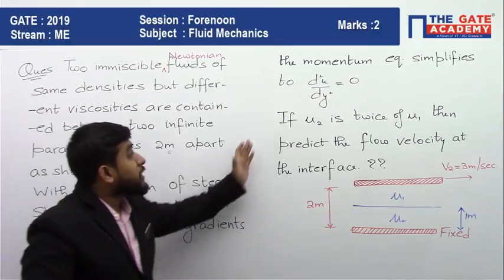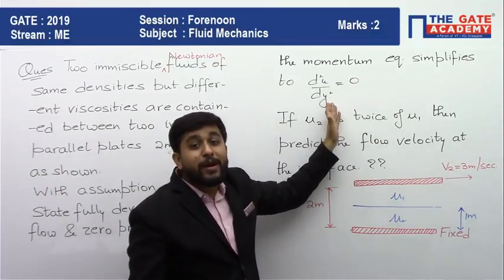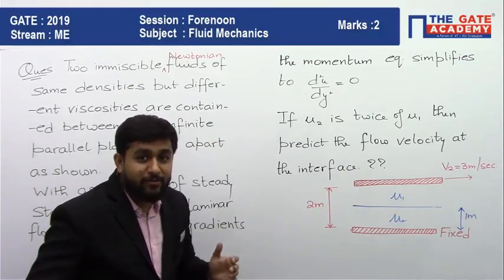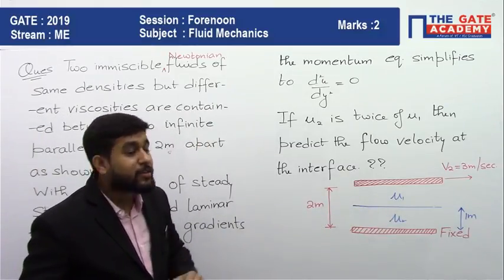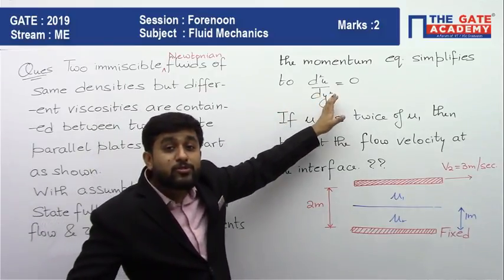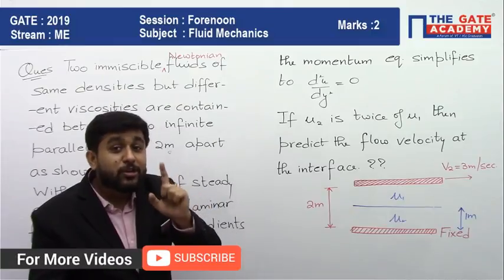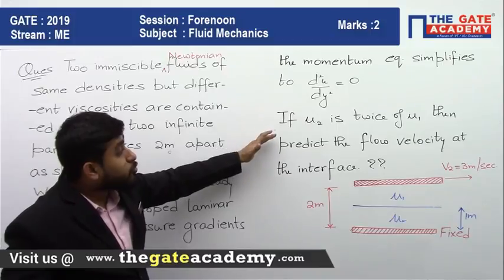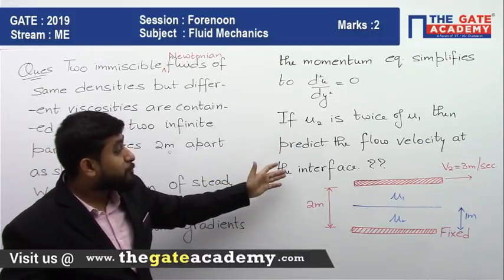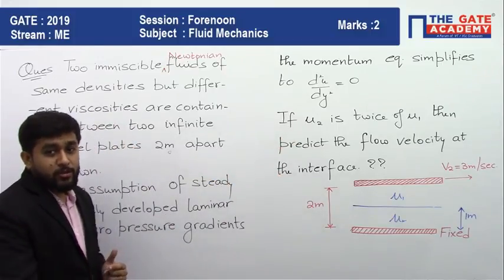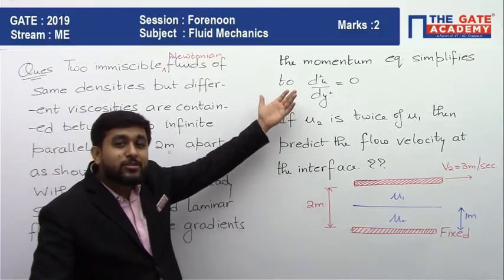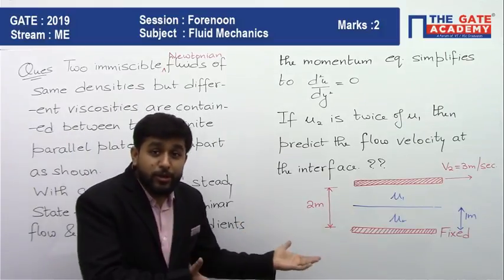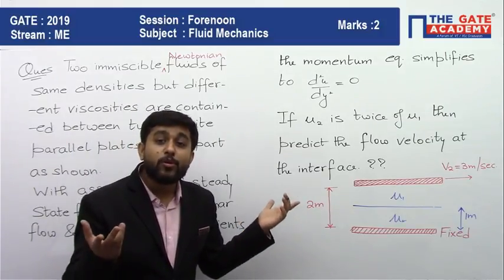For zero pressure gradient, the momentum equation simplifies to d²u/dy² = 0. In the general case it would be d²u/dy² = constant · (dp/dx), but since pressure gradient is zero, the right-hand side becomes zero. They are asking for the flow velocity at the interface when mu2 is twice mu1. We need to integrate this equation to get u as a function of y, but since this is already simple shear flow, integration is not necessary — the velocity profile is directly linear.